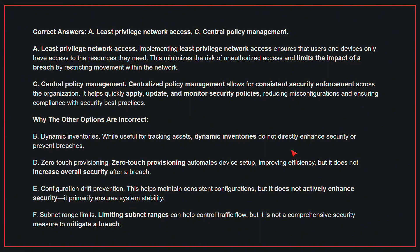Why the other options are incorrect: B, Dynamic Inventories, while useful for tracking assets, do not directly enhance security or prevent breaches. D, Zero-Touch Provisioning, automates device setup improving efficiency, but does not increase overall security after a breach. E, Configuration Drift Prevention, helps maintain consistent configurations but does not actively enhance security — it primarily ensures system stability. F, Subnet Range Limits, can help control traffic flow but is not a comprehensive security measure to mitigate a breach. Therefore, the correct answers are A, Least Privileged Network Access, and C, Central Policy Management.